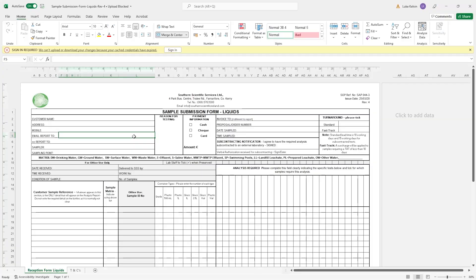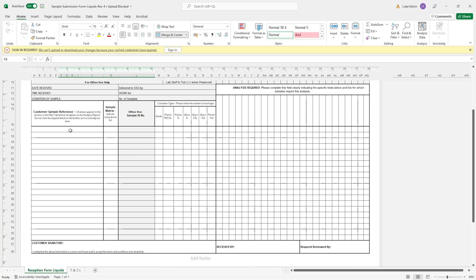You can also request to have your results sent to you via post. Mark the date and time sampled, the sampling point, example kitchen sink, a sample reference of your choosing. The sample matrix is DW and the required analysis as chemistry and microbiology test.